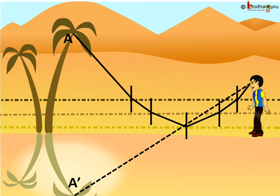When this ray reaches someone's eye, it appears like the ray is coming from point A' on the ground. How is that possible? The traveler thinks that must be a reflection of a tree in the water, and thus he gets tricked by thinking there is water ahead.